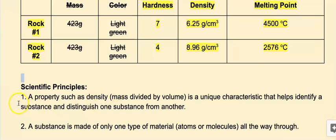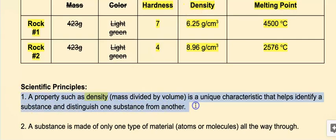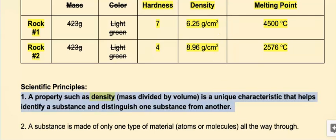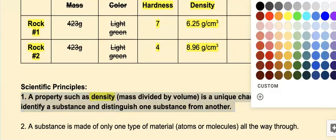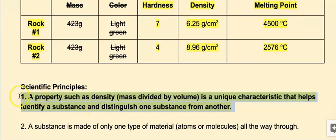The first scientific principle states that a property such as density — which is mass divided by volume — is a unique characteristic that helps identify a substance and distinguish one substance from another. It has the word density in it, so that's an important one because I have density up here. I'm going to keep this one, bold it, and highlight the whole thing because that's a keeper — I want to use that one later.